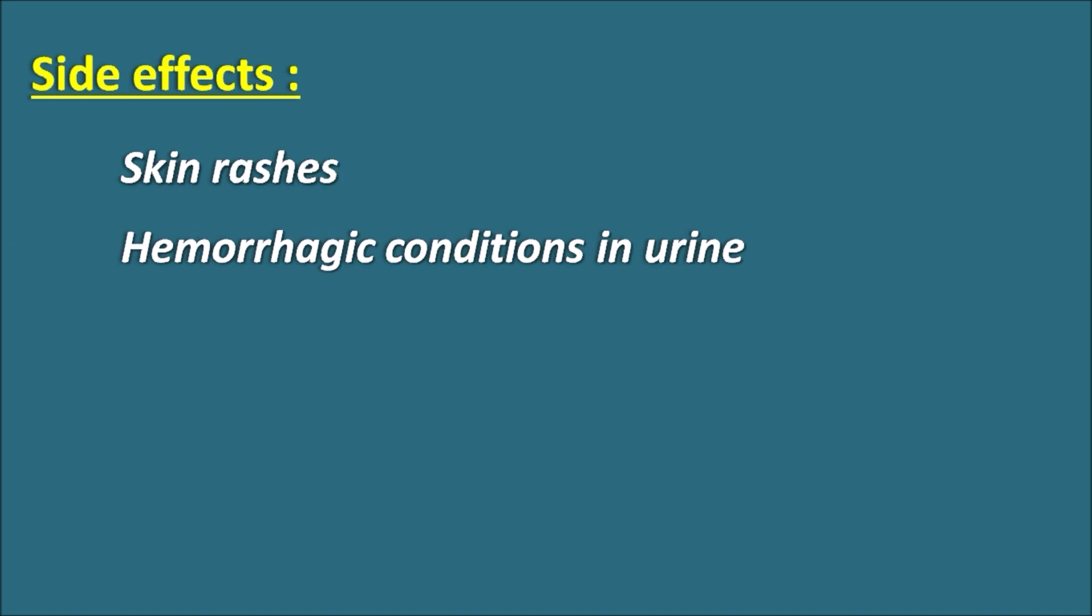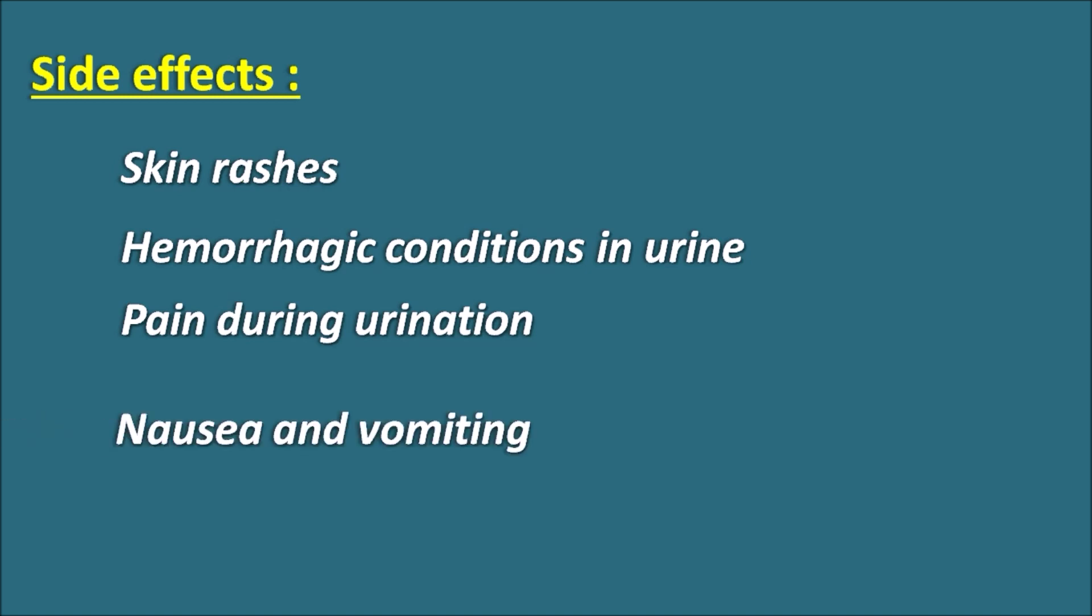What are the side effects of Methenamine? One important side effect is skin rashes which can be observed after treatment with Methenamine. Sometimes you can also observe hemorrhagic conditions in the urine - small blood can be present in the urine. Pain during urination is one more problem that is reported by long-term use of Methenamine. Apart from these side effects, Methenamine can also produce some common side effects like nausea and vomiting, diarrhea, as well as reduced appetite.